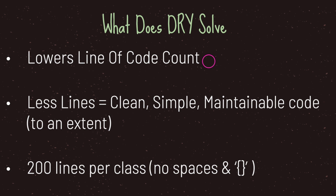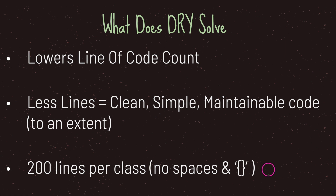The reason we use the DRY principle is that we lower the code count of our class. In most cases fewer lines equals cleaner, simpler, and more maintainable code — obviously the less code you have to read, the easier your understanding of what's going on. There is an unspoken rule: keep your classes around 200 lines, not counting spaces or curly brackets. This is not a hard rule, but if you're going above 200 lines you may need to look and see if you have code duplication.